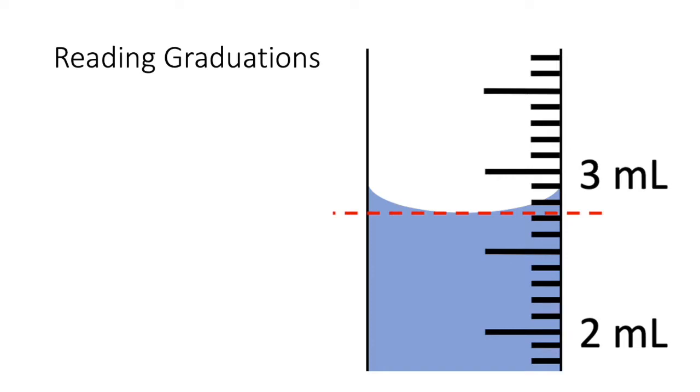Determining the volume of liquid inside a piece of glassware with graduations can be a little bit difficult. Any liquid or solution inside a container is going to develop a meniscus, which is the curved shape at the surface that happens due to surface tension.